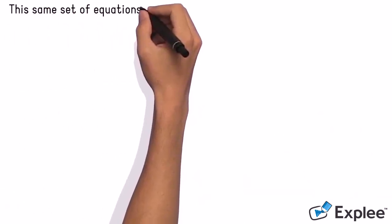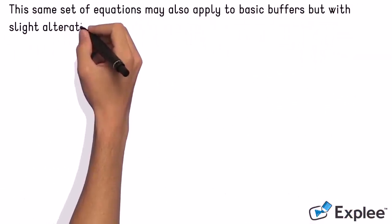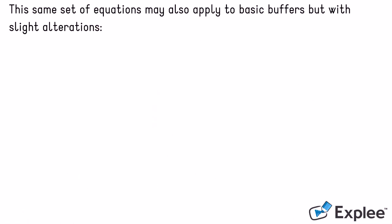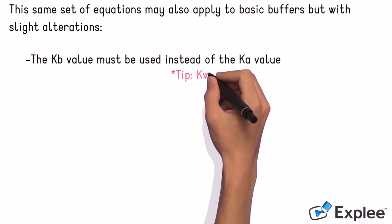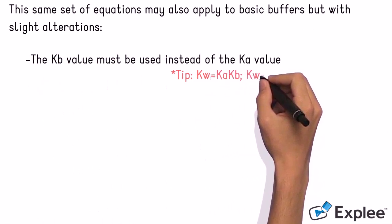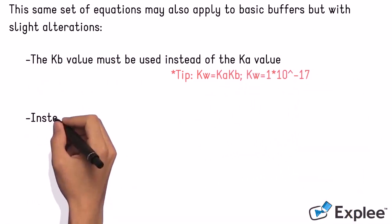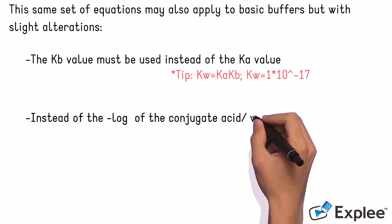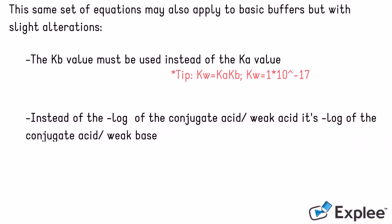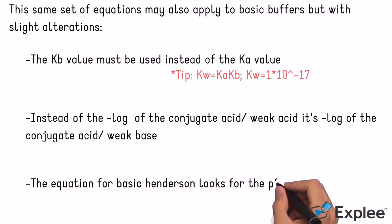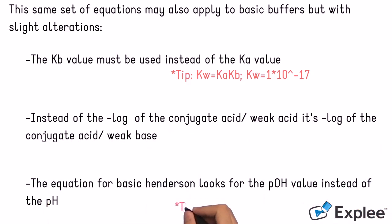This same set of equations may also apply to basic buffers but with slight alterations. The Kb value must be used instead of the Ka value. Instead of the negative log of the conjugate base over the weak acid, it uses the negative log of the conjugate acid over the weak base. The equation for basic Henderson looks for the pOH value instead of the pH value.